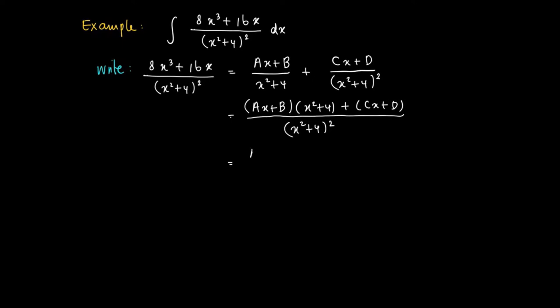Now we take all cubic terms together, all quadratic terms, linear terms, and constants together. We try to find those constants such that the cubic polynomial we find here equals 8x³ + 16x.